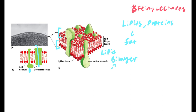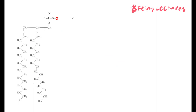Just remember that the cell membrane is made of lipids — fats — and it has proteins in it. What kind of fat makes the cell membrane? The lipid that makes the cell membrane is called a phospholipid.